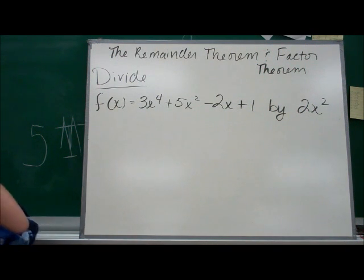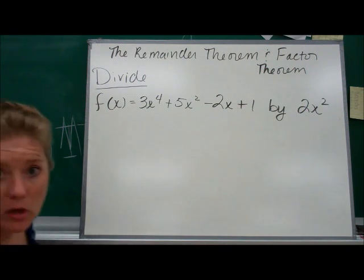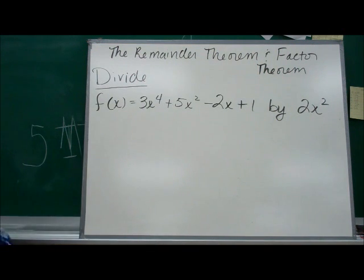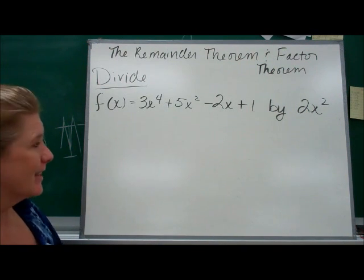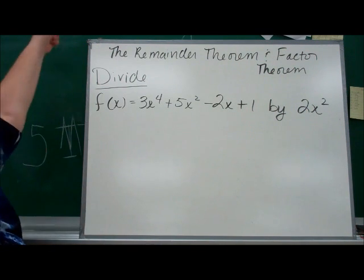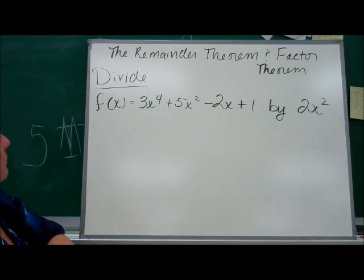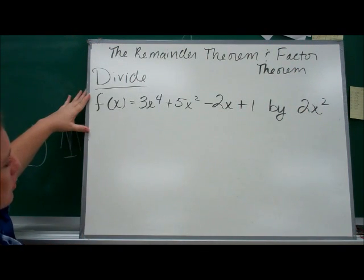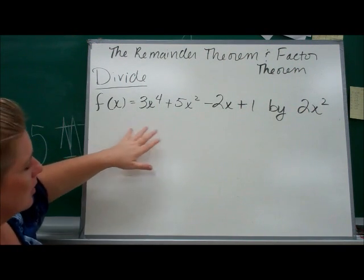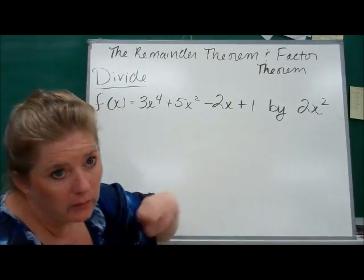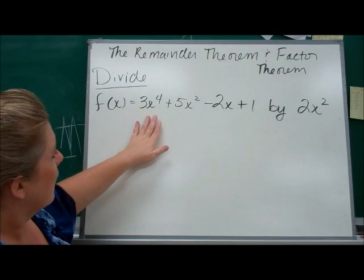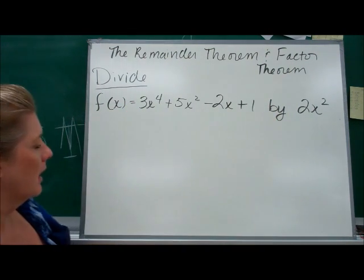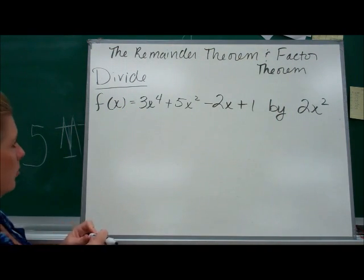Before we can talk about remainders and factors, we have to talk about division. We are going to be doing polynomial division. Here is one type: you can divide a polynomial by a monomial, and if this is what you're doing, you're just going to divide every term of the polynomial by that monomial.